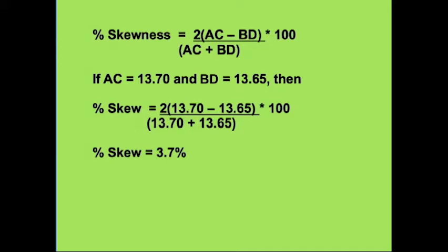For example, if diagonal AC is 13.70 inches and BD is 13.65 inches, then the percent skewness would be 13.70 minus 13.65 times 2, and this product divided by 13.70 plus 13.65, and this value multiplied by 100 will give 3.7 percent skewness. A positive percent change indicates product skewness to the left, which is referred to as left-hand skew. A negative percent change indicates product skewness to the right, which is referred to as right-hand skew.